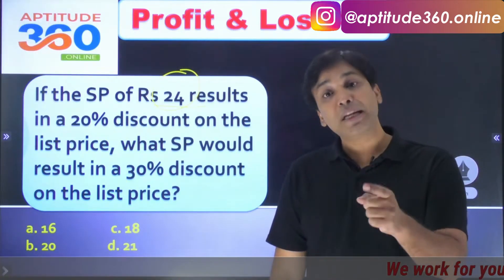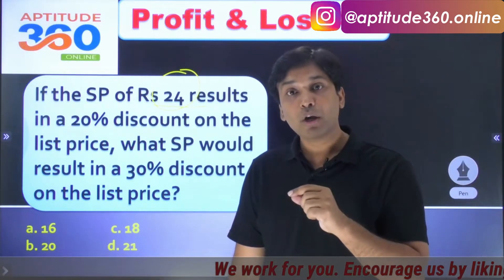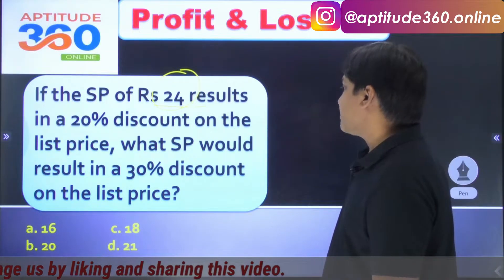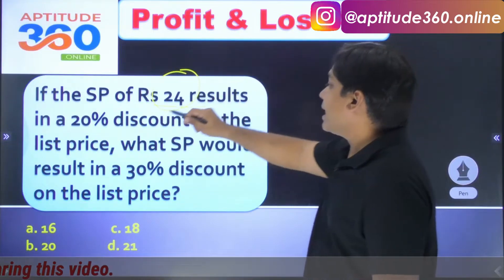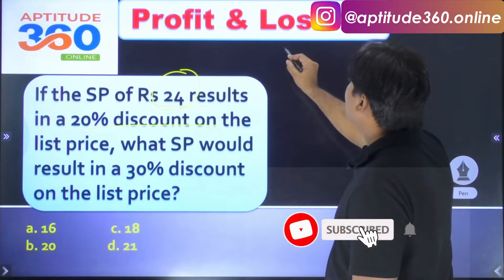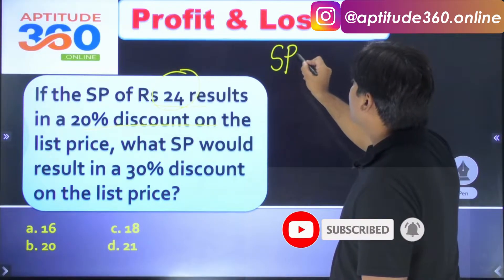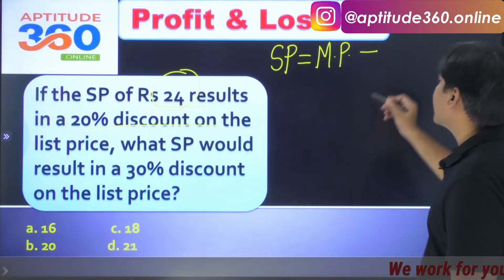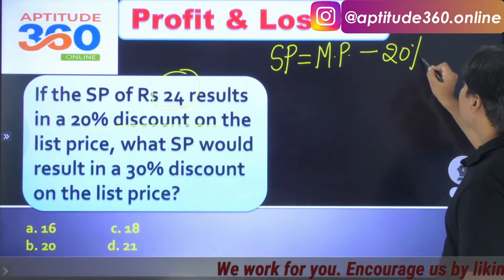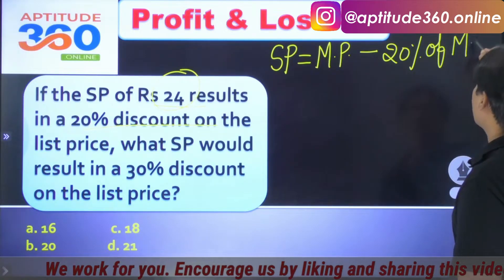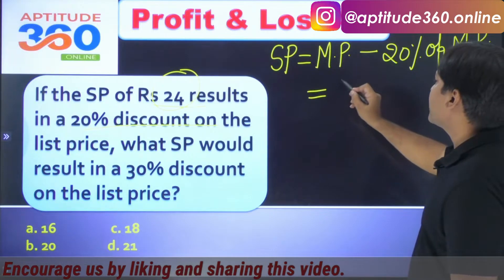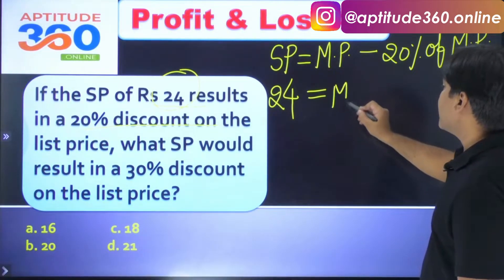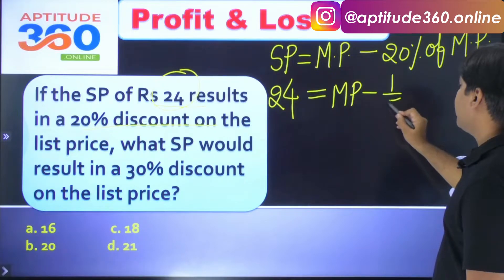The selling price is given as Rs. 24, but we are not told the marked price. Since there is a 20% discount on the list price, selling price equals marked price minus 20% of marked price. So: 24 equals marked price multiplied by (1 minus 1/5), which is 4/5 of marked price equals 24.